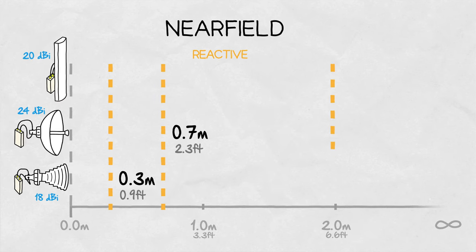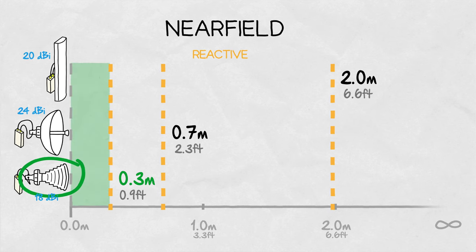And for a 20 dBi pejoria sector, this extends to almost 2 meters. Maintaining a reactive near field free of obstacles is much simpler with antennas with small form factors, enabling much denser collocation.